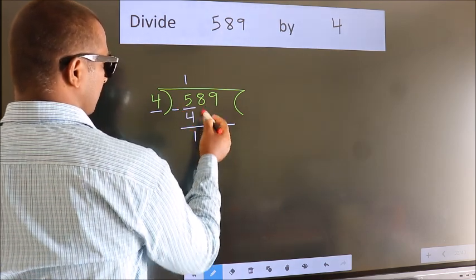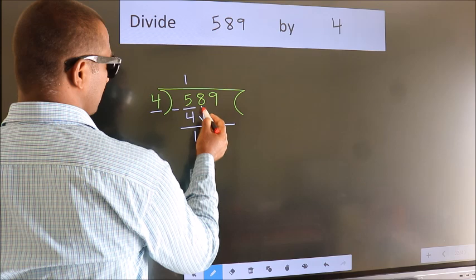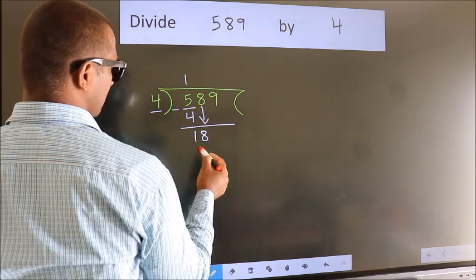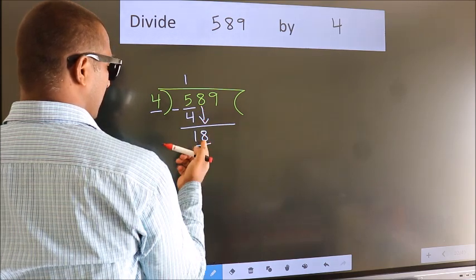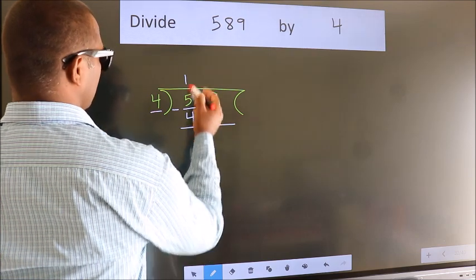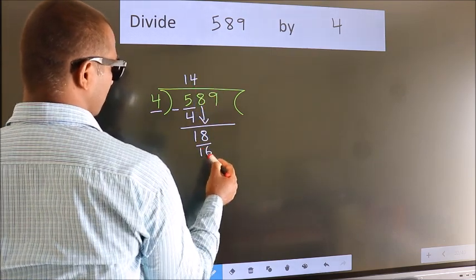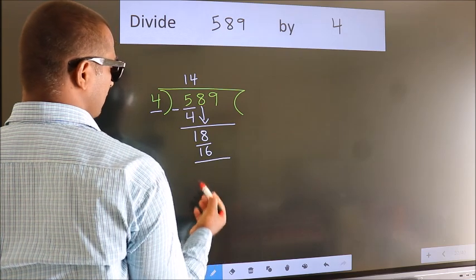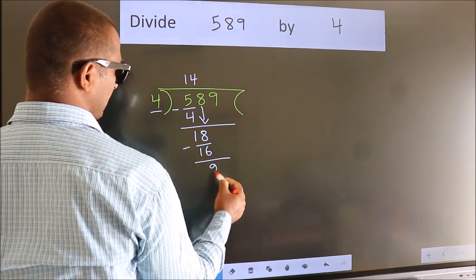After this, bring down the beside number. So, 8 down. So, 18. A number close to 18 in 4 table is 4 fours, 16. Now, we subtract. We get 2.